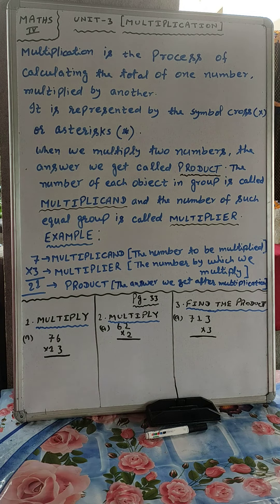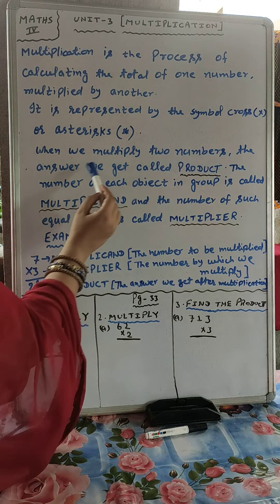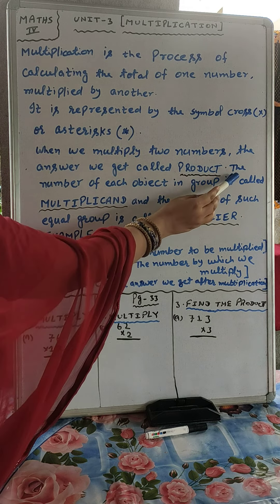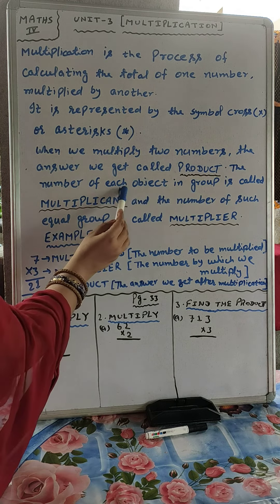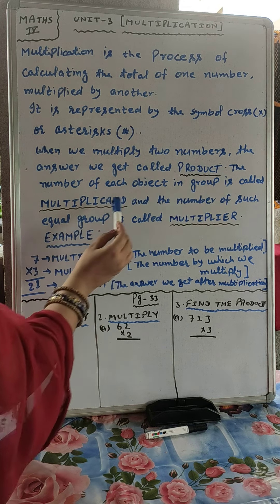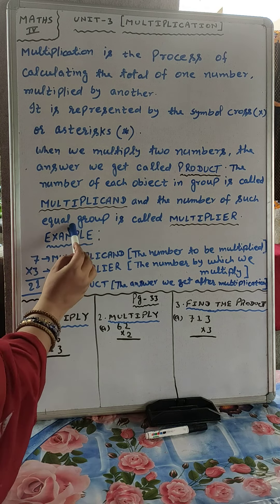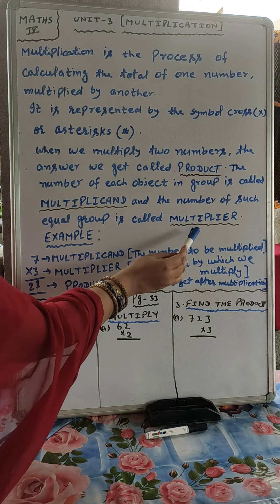When we multiply two numbers, the answer we get is called the product. The number of each object in a group is called the multiplicand, and the number of such equal groups is called the multiplier.